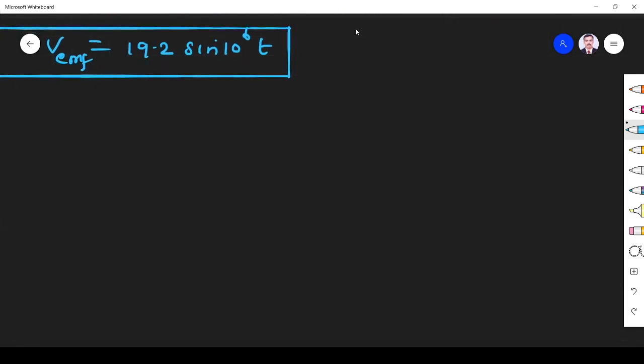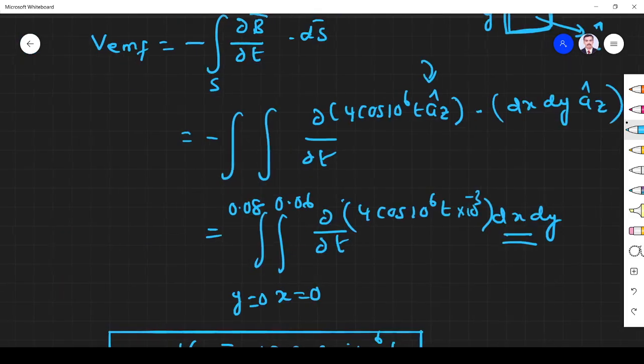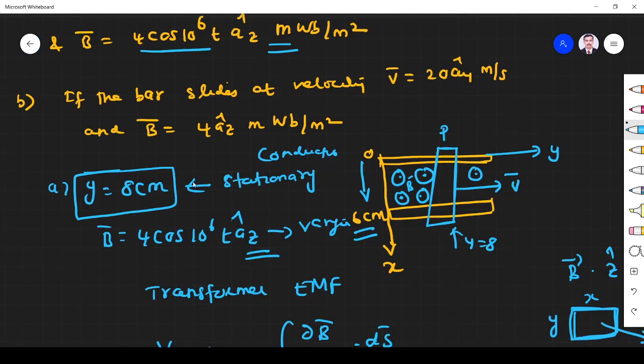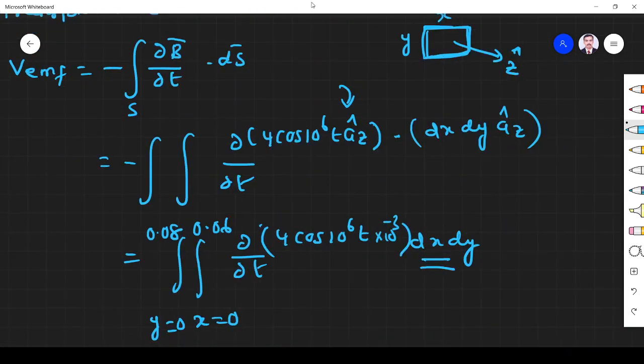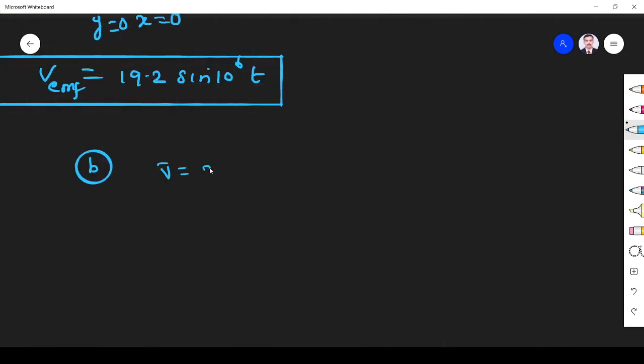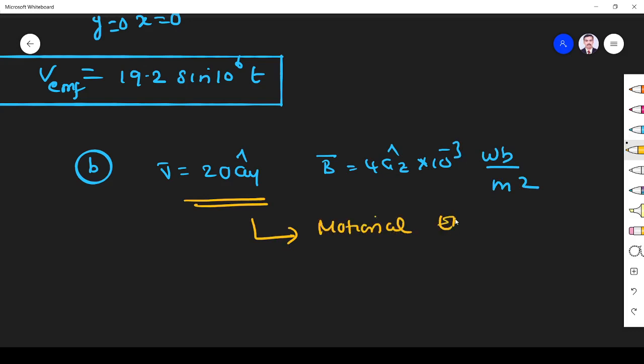Second problem, part b: here the bar is sliding, conductor is moving. Conductor moving means surely it is motional EMF. The magnetic field is this one. V equals 20 ay, and B is given by 4 az milli, so times 10^-3 weber per meter square. Now what I have to do: conductor moves means it is motional EMF.